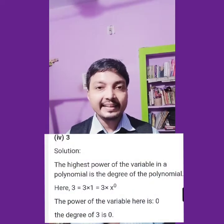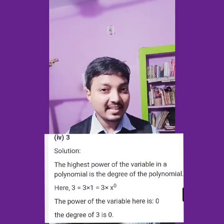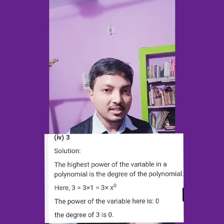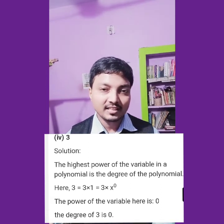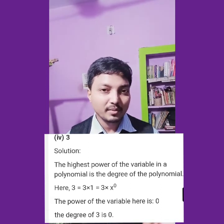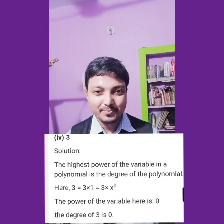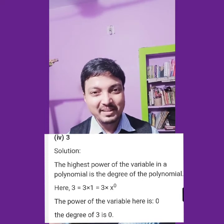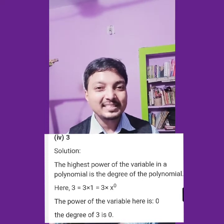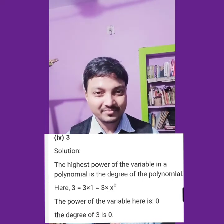Next one is 3 — a constant term. A constant has no variable, meaning x to the power 0. The degree is 0.